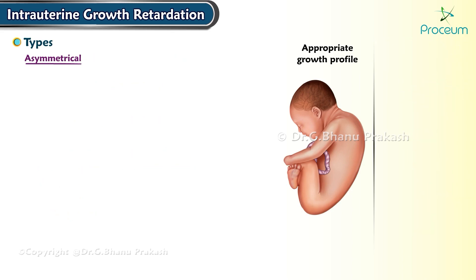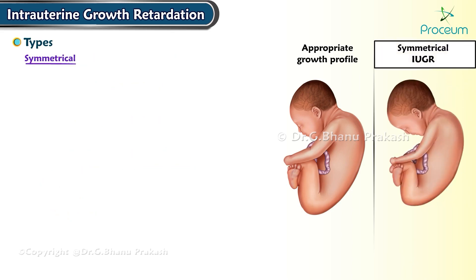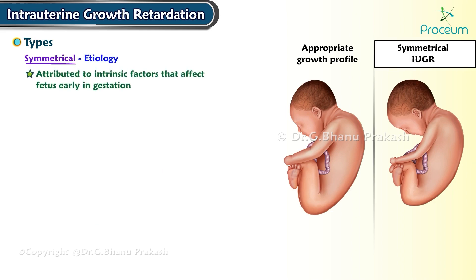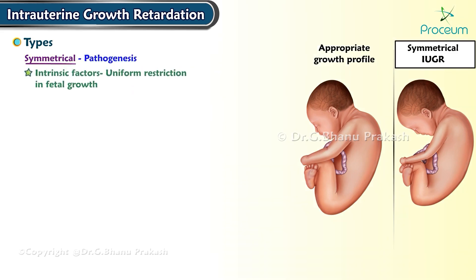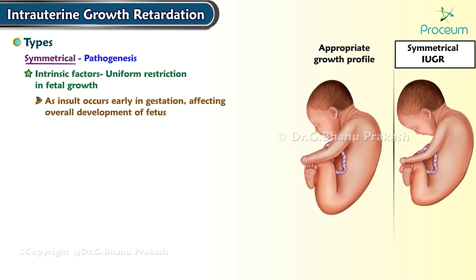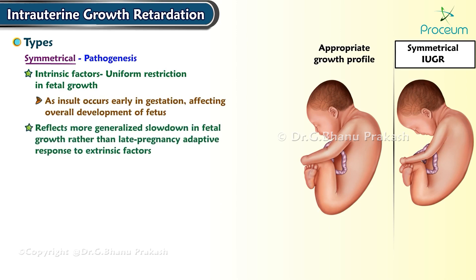Symmetrical intrauterine growth restriction is attributed to intrinsic factors that affect the fetus early in gestation, including genetic abnormalities and infections impacting the fetus uniformly. These intrinsic factors cause a uniform restriction in fetal growth, as the insult occurs early in gestation affecting overall fetal development. This type of growth restriction reflects a more generalized slowdown in fetal growth rather than a late pregnancy adaptive response to extrinsic factors.